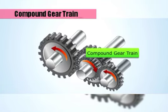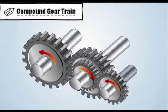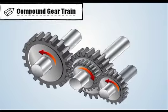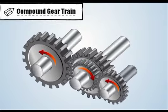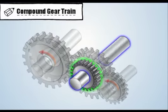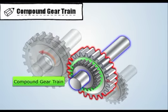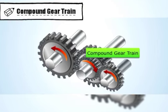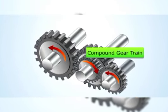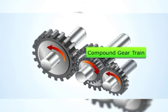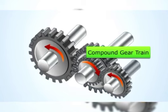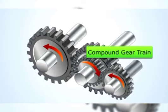As we know, a gear train is an arrangement where two or more gears are meshed together in order to transmit power or motion. In a gear train, if at least one shaft holds more than one gear, then it is called a compound gear train. It is used when the space between the input and output shaft is small and when a large change in speed or power is required.